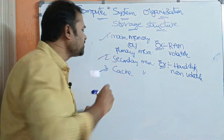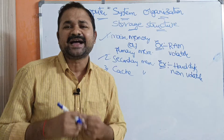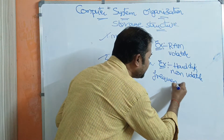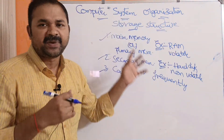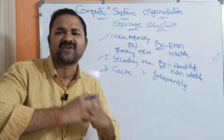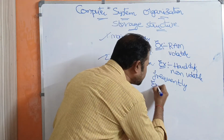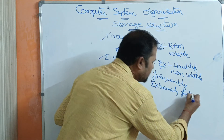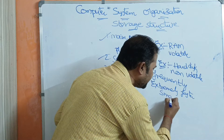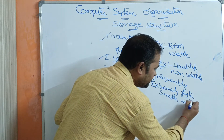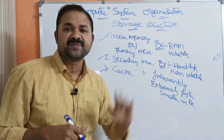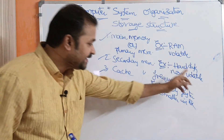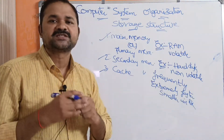Now let us see about the third memory, which is cache memory. Cache memory is mainly useful in order to store frequently used instructions. Cache memory is extremely fast memory — very, very fast — but the problem with cache memory is that it is very, very small in size.